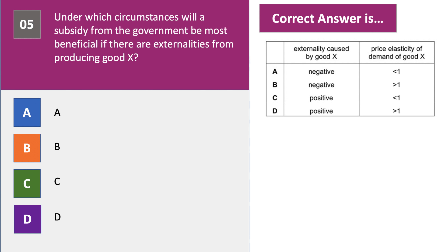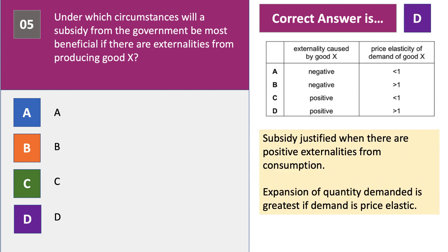What do we think for the last question? We're looking for when a subsidy will have the most beneficial effect if there are externalities. The answer to question five is D. We're looking for positive externalities in the first place — that's the reason for the subsidy, to encourage an increase in output of something that generates positive externalities. And then we're looking for the biggest change in demand. If you subsidise, that's likely to be when the price elasticity of demand is more than one, i.e. demand is price elastic. So the expansion of demand will be greatest if the coefficient is more than one. Hence the answer is D.